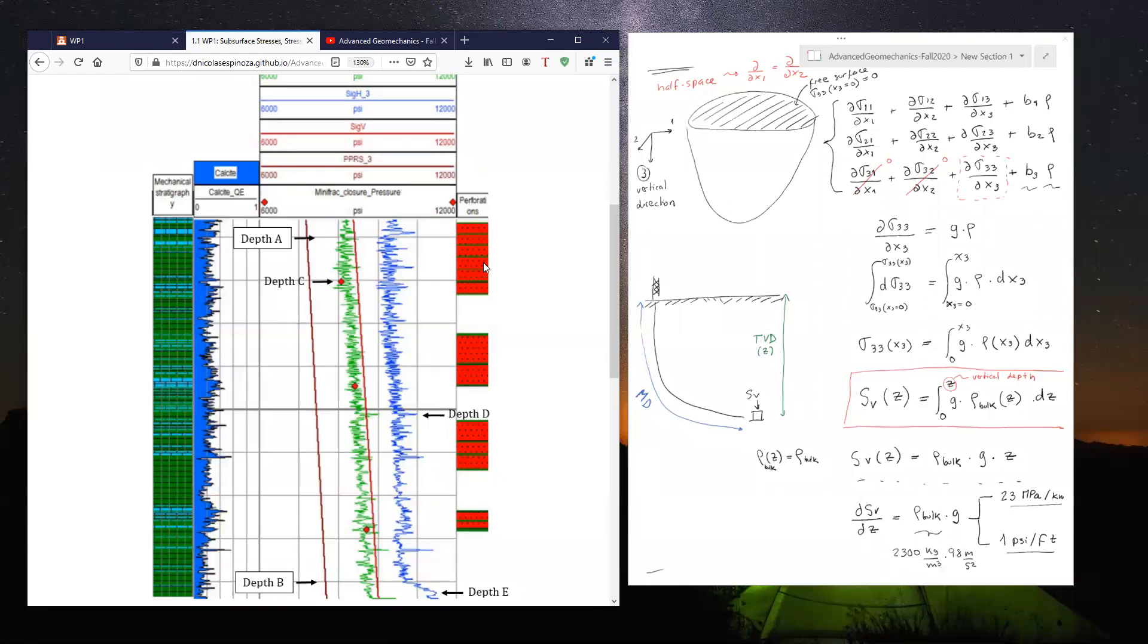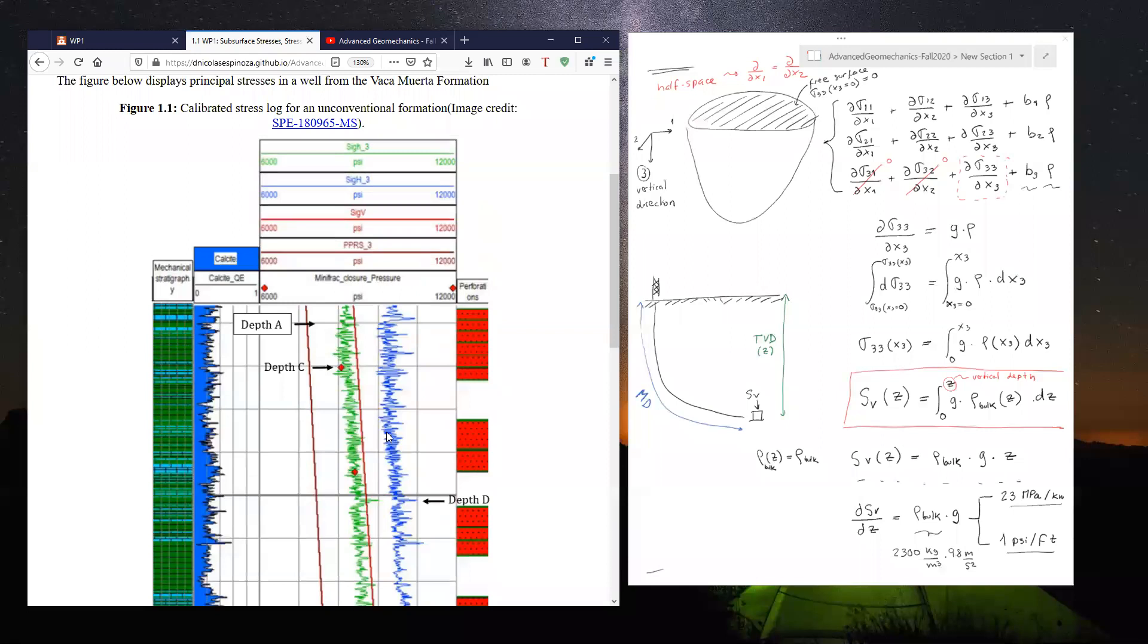The last track is where perforations were decided to be done for hydraulic fracturing in this vertical well. The first thing we're going to do with this is assume that this is a perfectly vertical well. This is an assumption that we're going to relax later on.